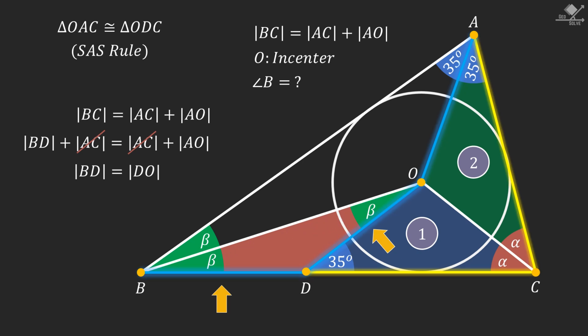From here, using external angle theorem, two beta will be equal to 35 degrees. And that is actually what we are looking for. Angle B is two beta and that is 35 degrees. I'll see you on the next one.